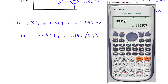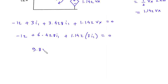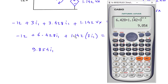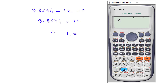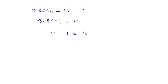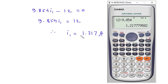Substituting Vx = 3·I1 into the equation: 6.428 plus 1.142 times 3 gives 9.854·I1 minus 12 equals 0. So 9.854·I1 equals 12, therefore I1 equals 12 divided by 9.854, which is 1.217 A.